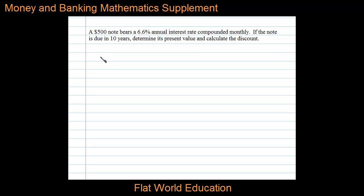We'll begin with the present value formula. The present value of the investment is equal to its future value divided by 1 plus i to the n power, where i is the interest rate per period and n is the number of periods.